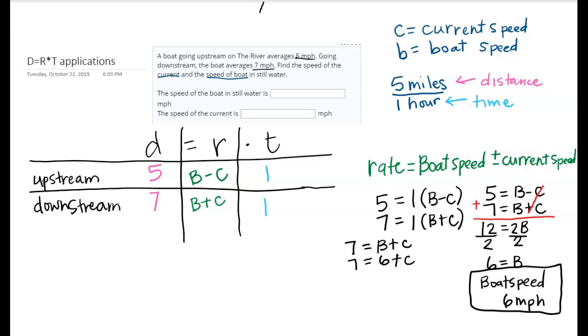We can replace it there. To get C by itself I just need to subtract that over. So I get 1 equals C.